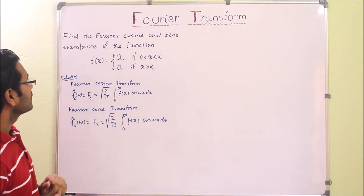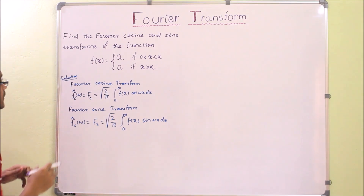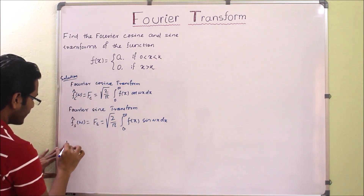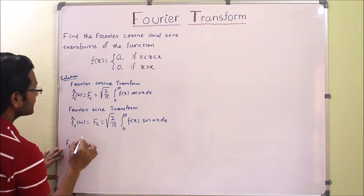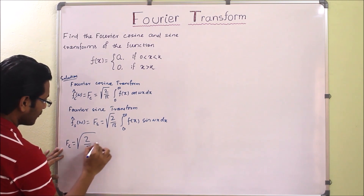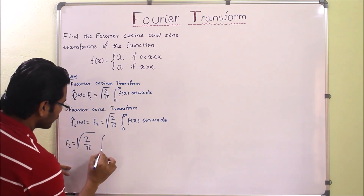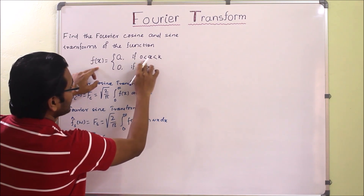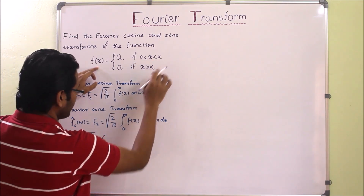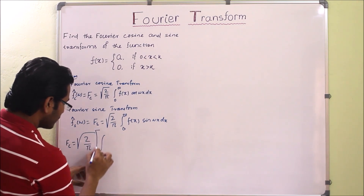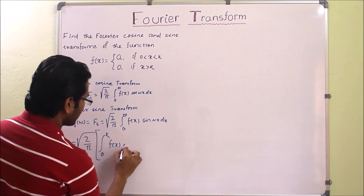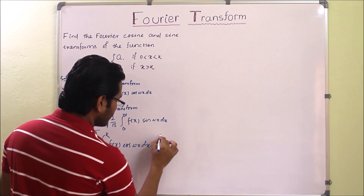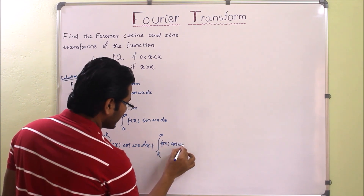Now we will use these formulas to find the solution. First we apply the Fourier cosine transform. F_c equals the square root of 2 over pi times the integral from 0 to infinity. Since f(x) is a piecewise function, we split the integral into 0 to k and k to infinity, giving integration from 0 to k of f(x) cos(wx) dx plus integration from k to infinity of f(x) cos(wx) dx.